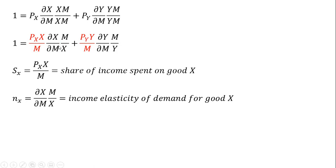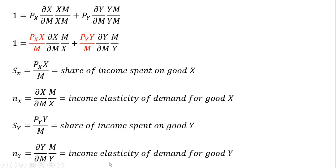That's the formula for the income elasticity of demand for good X. And then likewise for the remainder of this equation, we have the share of income spent on good Y. In red here, that's just the share of income spent on good Y. And then the remainder of that is the income elasticity of demand for good Y.